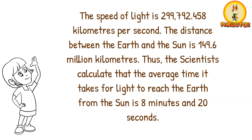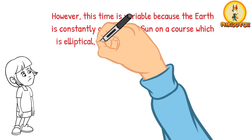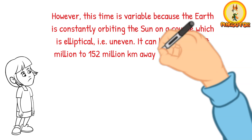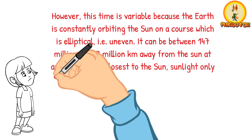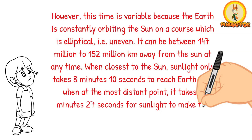However, this time is variable because the Earth is constantly orbiting the sun on a course which is elliptical, that is uneven. It can be between 147 million to 152 million km away from the sun at any time. When closest to the sun, sunlight only takes 8 minutes 10 seconds to reach Earth, and when at the most distant point, it takes 8 minutes 27 seconds for sunlight to make the journey.